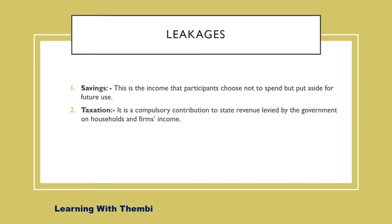Our second leakage is taxes. Taxes can either be indirect or direct. An example of an indirect tax is the value added tax on a product, and an example of a direct tax is income tax. Taxation is a compulsory contribution to state revenue, levied by the government on households or firms' income. When taxes are paid to the government, it represents a leakage from the money flow in much the same way as savings. Only in this case, there is no choice — with savings you choose to save, but with taxes, taxation is imposed on you.